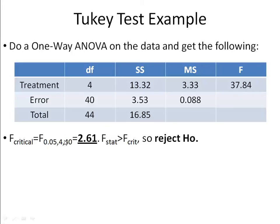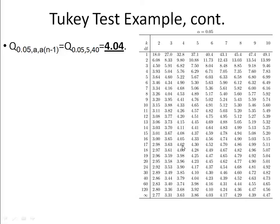So, the F-critical value for this can be determined through looking at an F-table as 2.61. And since the F-statistic we calculate, 37.84, is much greater than 2.61, we reject the null hypothesis. So, that says that there is a statistically significant difference, and now we'll do a Tukey test to determine what means are different from one another.